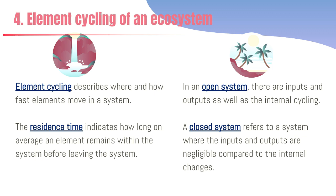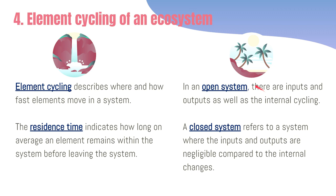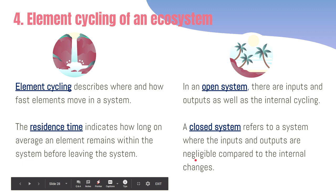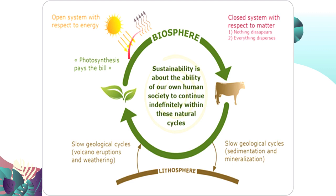The fourth principle is element cycling of an ecosystem. This tells us where and how fast elements move in a system, while residence time indicates how long on average a particular element remains in a system before it leaves. In terms of energy, the earth and all ecosystems are considered open systems, as they are constantly receiving energy from the sun. In terms of matter, the earth is considered a closed system.